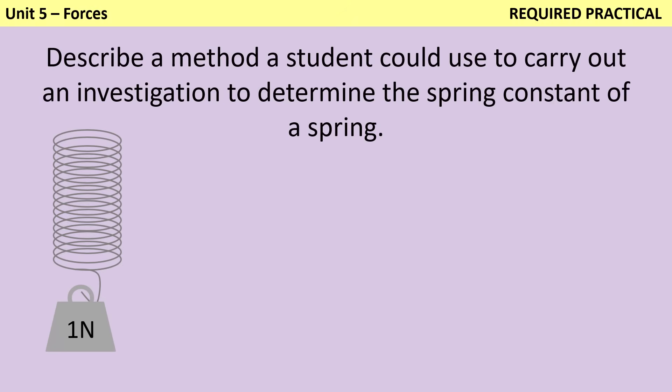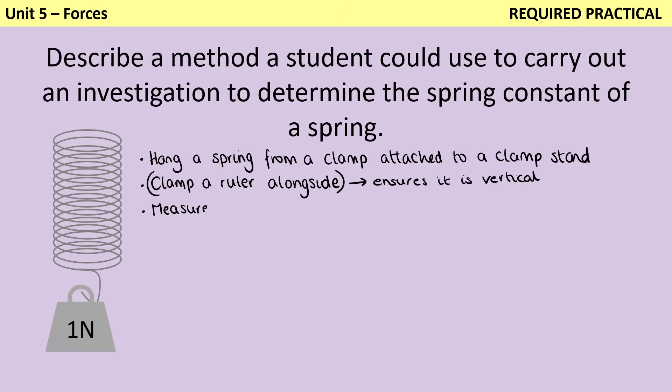To write a method for a six mark question about this required practical, you would firstly describe hanging a spring from a clamp that's attached to a clamp stand. Then you would probably mention clamping a ruler alongside. You can just hold the ruler in your hand, but the advantage of clamping it is that it ensures that it's vertical. You then measure the initial length of the spring before you've added any masses to it, and then you add a one newton weight that's hanging from that spring.